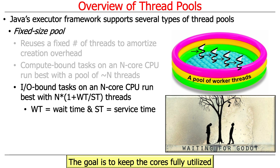Here is a formula that gives you a hint as to how many threads to use for I/O bound tasks. We want to keep the cores as utilized as possible. The formula is N times (1 + WT/ST), where N is the number of cores, WT is wait time — how much time a thread spends waiting for I/O — and ST is service time — how long it actually takes to compute once it has the data it needs.